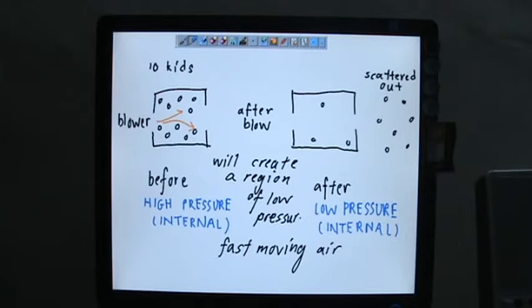Okay, fast moving air because it blown off most of the air particles represented by kids. So we have already created a region of low pressure. So this is the region of low pressure here, because of the less air particles.